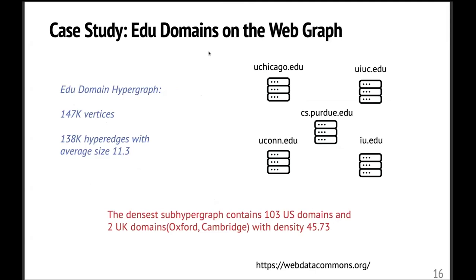To showcase the potential usage of our objective, we perform some case study on an EDU domain hypergraph. So we extract an EDU domain hypergraph from the web graph by creating one hyperedge for all the domains interacting with a specific host. And on the left side, there are some statistics about this hypergraph. And if we compute the global optimum for densest subhypergraph, then the result is super unsurprising. It basically contains the top US universities plus Oxford and Cambridge. So it brings you limited information.